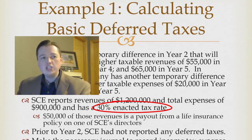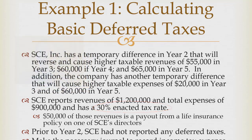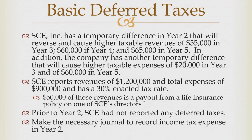You have to use the enacted tax rate — not what you think it's going to be or what you hope it will be, but what is currently law. Of the $1.2 million in revenues, $50,000 is from a life insurance policy paid out because one of the company's directors passed away. SE has not had any deferred taxes in the past, so there's no beginning balance to worry about. We want to make the necessary journal entry to record income tax expense in year two.